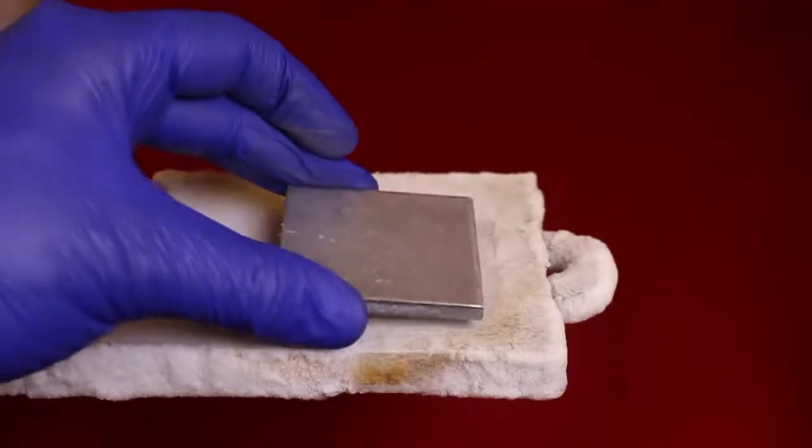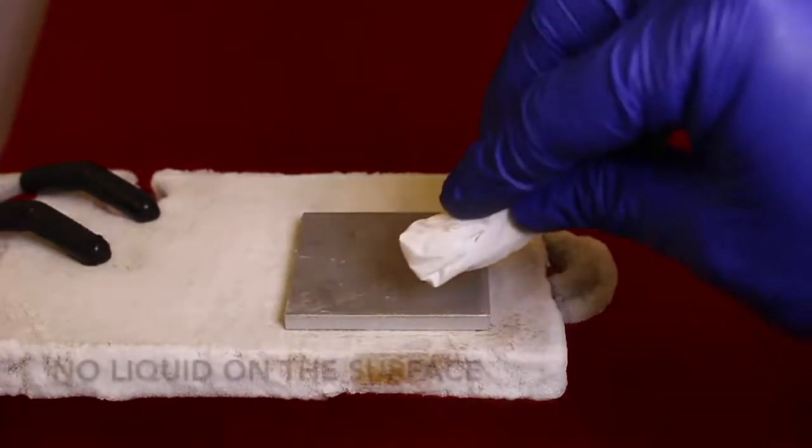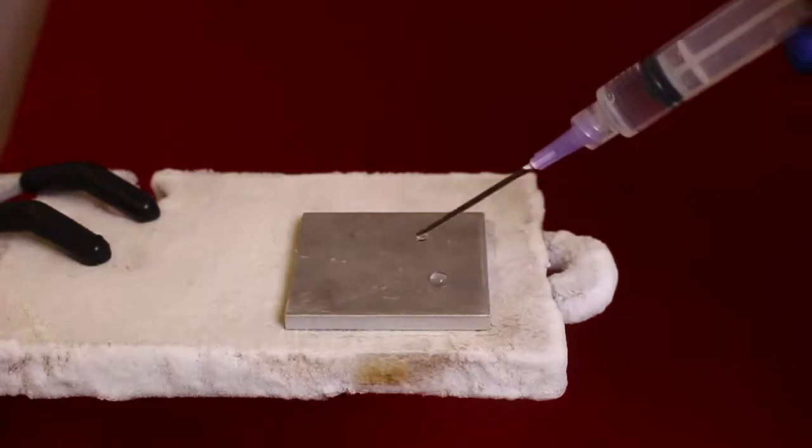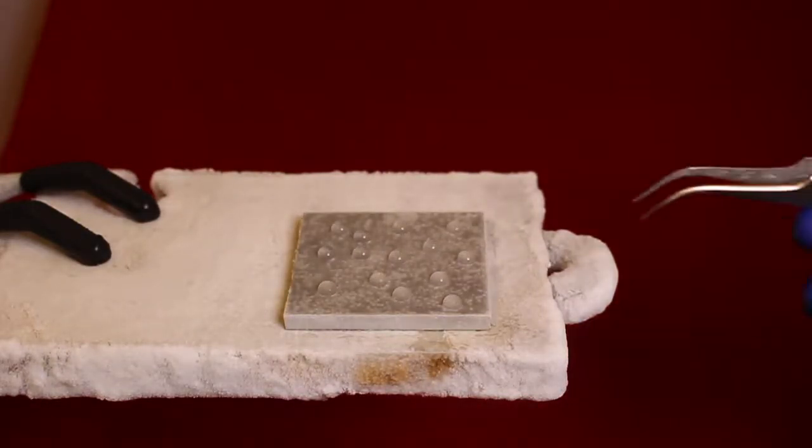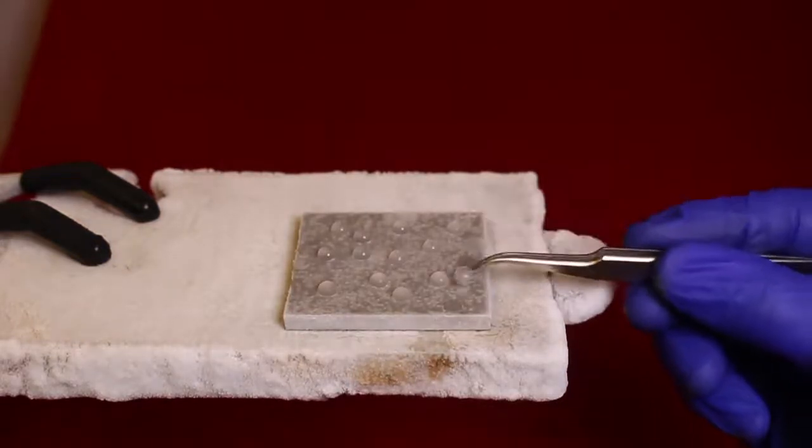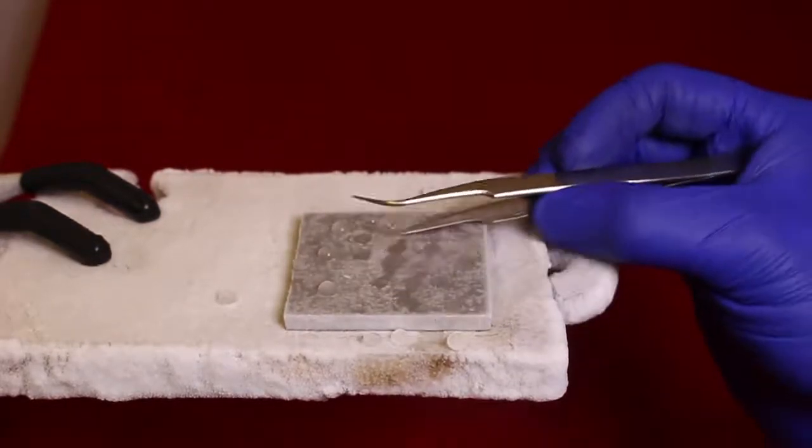To prove it to you, we allow ice to form on the same surface that we previously scraped and ensure that it is dry. No further changes will be made to the surface. As you can see, after the ice forms on the surface, it can be easily removed with just tweezers. This proves the high durability of our spray coating.